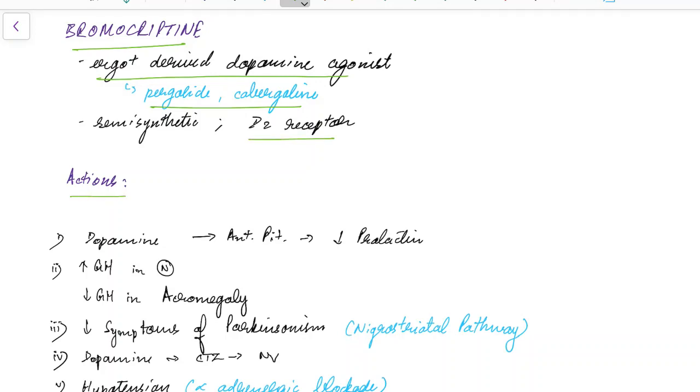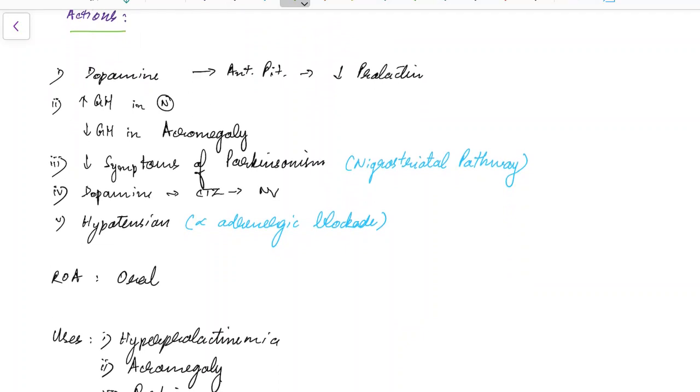Now let us see about the actions of Bromocryptin. Dopamine acts on the anterior pituitary gland to inhibit the production of prolactin. Bromocryptin has a similar effect on the anterior pituitary gland, so Bromocryptin inhibits the production of prolactin.